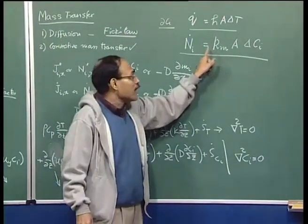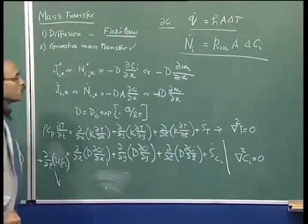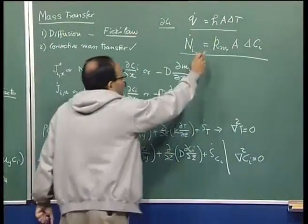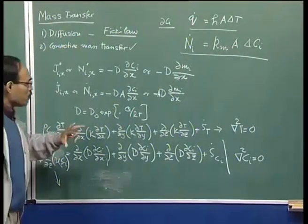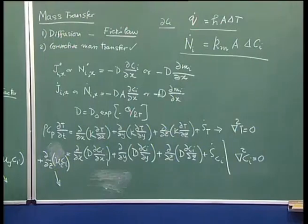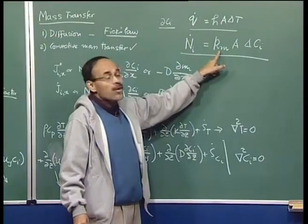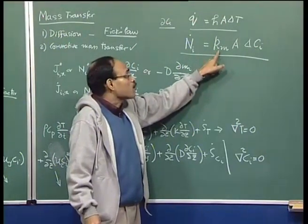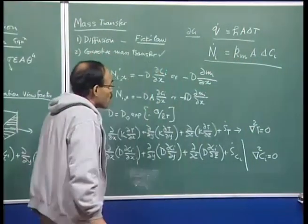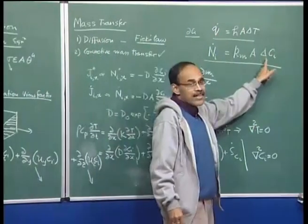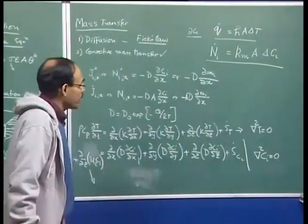k_m cannot be known unless we have information about the fluid flow, so indirectly through k_m we incorporate the influence of fluid flow. In convective mass transport, the main objective for calculation of mass transport rates boils down to the calculation of the convective mass transfer coefficient k_m. If we can calculate k_m, then ΔCᵢ will be known through thermodynamics, and this is where thermodynamics really comes in — to find the delta Cᵢ driving force.